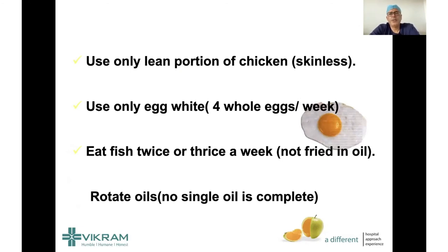For non-veg foods: lean portions of chicken are good, skinless is better. Egg white is very good protein — you can take as much as you want, except in kidney disease. Most heart patients can have four whole eggs per week; healthy people without cholesterol problems can have one whole egg per day. Fish is good for healthy eating twice or three times a week — ideally not fried, but if you do fry, fry in less oil. For oils, no single oil is complete — you should rotate two or three oils in a year, using one oil for two to three months and then changing.